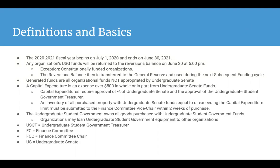Just a reminder that generated funds are all organizational funds not appropriated by Undergraduate Senate. We have a new definition for a capital expenditure: a capital expenditure is an expense over $500 in whole or in part from Undergraduate Senate funds. Capital expenditures require approval of two-thirds of Undergraduate Senate and the approval of the Undergraduate Student Government Treasurer. An inventory of all purchased property with Undergraduate Senate funds equal to or exceeding the capital expenditure limit of $500 must be submitted to the Finance Committee Vice Chair within two weeks of purchase.